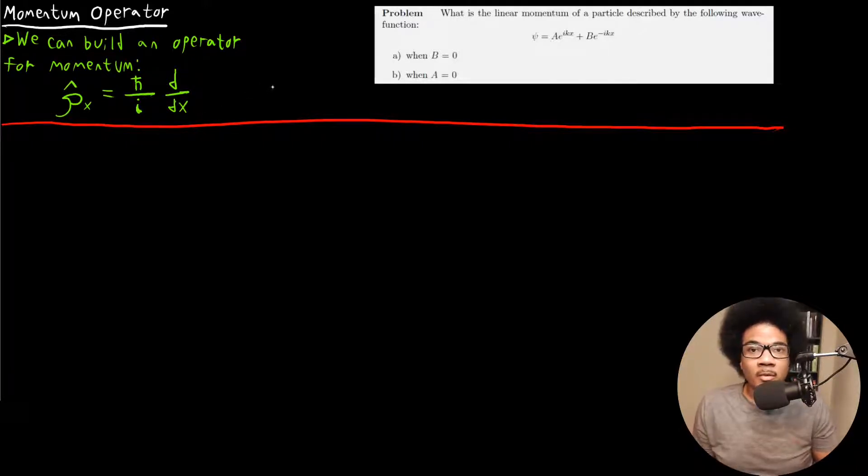Let's look at an example of applying this linear momentum operator. This problem asks: what is the linear momentum of a particle described by the following wave function? We got the free particle wave function that we're familiar with at this point. It's asking for part A when B is equal to zero and part B when A is equal to zero. Both of these cases are when you cancel out one of those functions that's involved in that superposition.